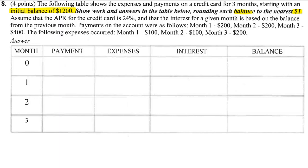Assume that the APR for the credit card is 24%, and the interest is based on the balance from the previous month. We've got a list of payments to fill in. For month one, no payment, no expenses, no interest. Payments will be $200, then $200, then $400.